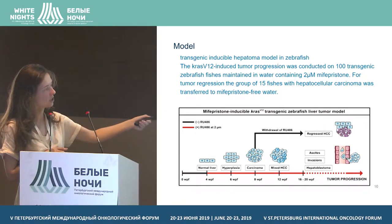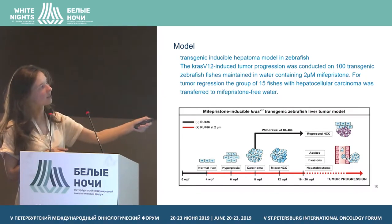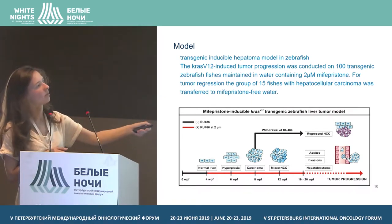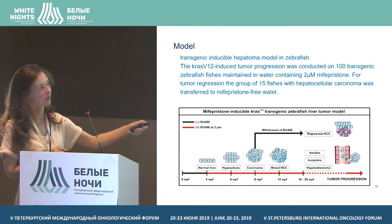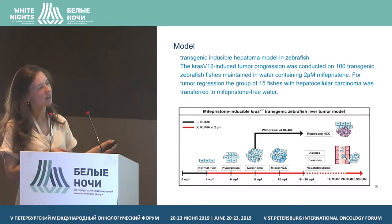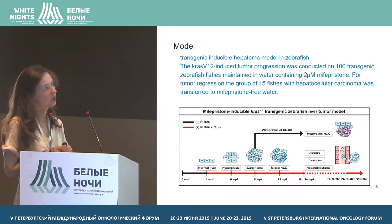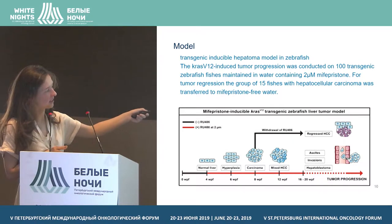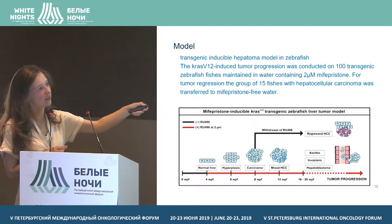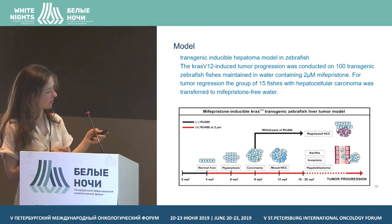You can see all those grades: normal liver, hyperplasia, and then hepatic cell carcinoma. If at this stage a cancer gene was removed from the medium, we observed tumor regression. In order to analyze those cells' transcriptomes, we made analysis of transcriptomes at the stages of normal liver, hepatic cell carcinoma, and regressed liver.